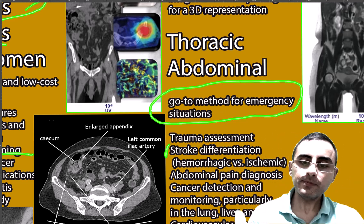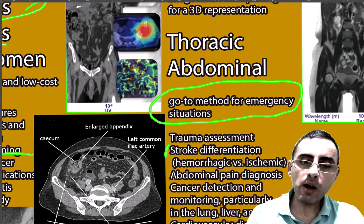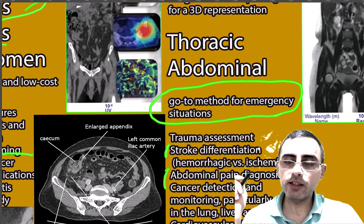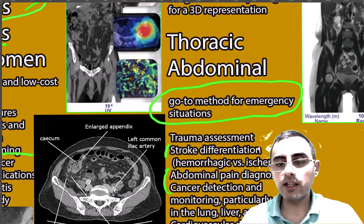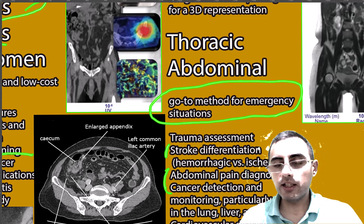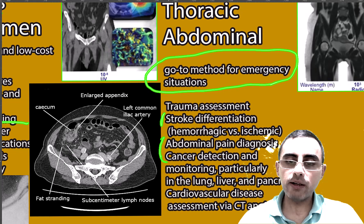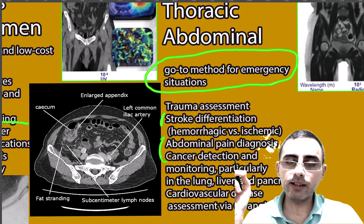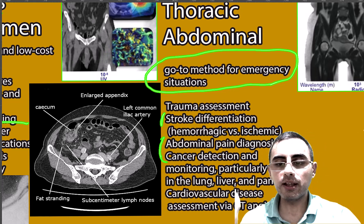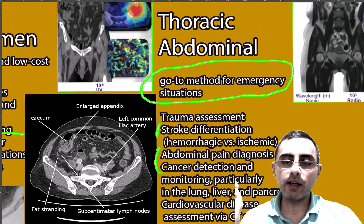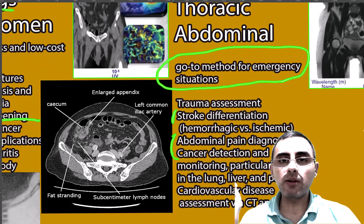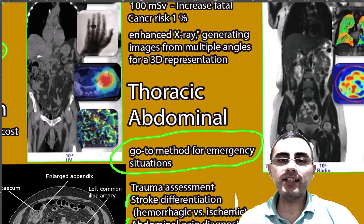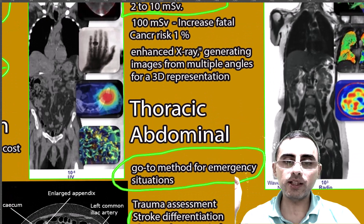CT scan is also very important for abdominal pain diagnosis, cancer detection and monitoring — particularly for lung, liver, and pancreatic cancer — and for cardiovascular disease assessment through CT angiography. CT scan sees almost everything and is the go-to method, but it carries significant radiation exposure.